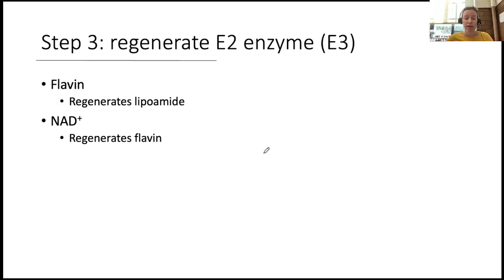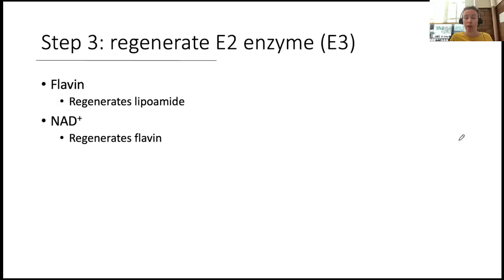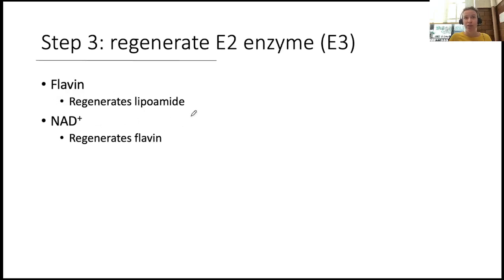Enzyme E3 needs to regenerate the catalyst. In the process of E2 doing its work, its disulfide bond becomes reduced. To use E2 as a catalyst we must oxidize it so it can continue. E3's job is to help regenerate E2: E3's flavin — its FADH₂ — is used to regenerate the lipoamide. But in doing so, E3 itself becomes reduced, so E3 also uses an NAD⁺ to regenerate its own flavin so it can continue being a catalyst.